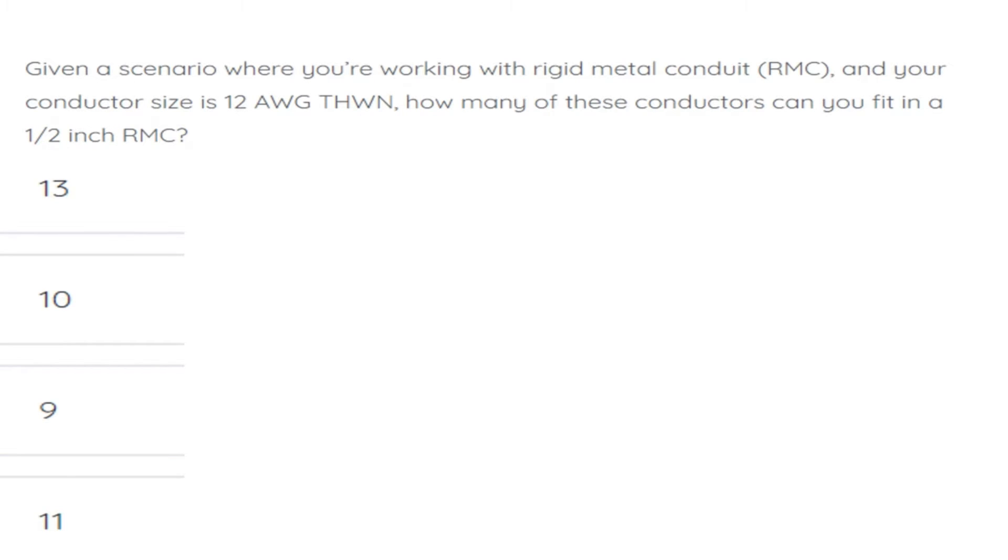Given a scenario where you're working with rigid metal conduit and your conductor size is 12 AWG THWN, how many of these conductors can you fit inside of a piece of half-inch RMC? The correct answer is nine.